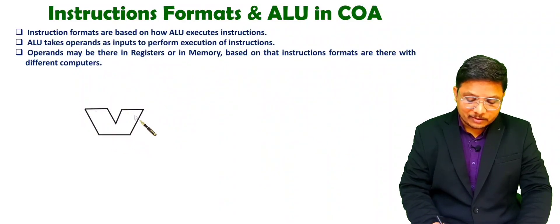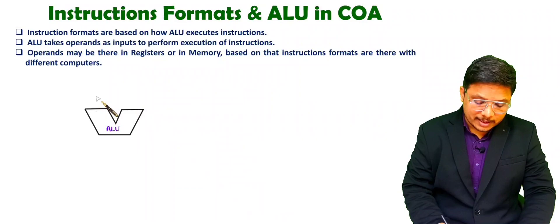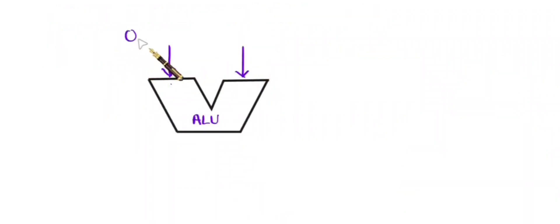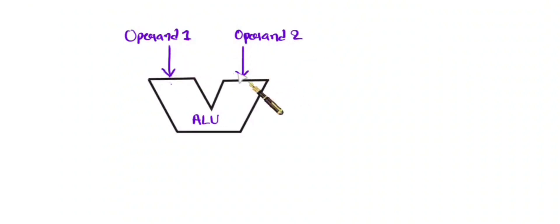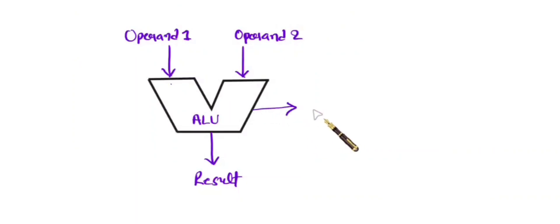So let me explain how ALU is structured. You see the basic symbol of ALU — we give two inputs, which are our operands: operand 1 and operand 2. These are the inputs on which ALU will perform arithmetic and logical tasks, and here the output — the result — will be produced. When any arithmetic and logical task is performed by ALU, it will also change the status stored inside the flag register or PSW register.